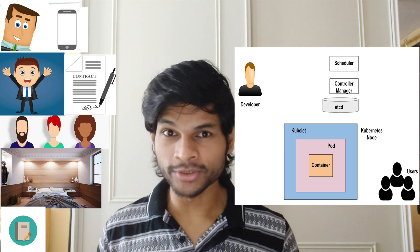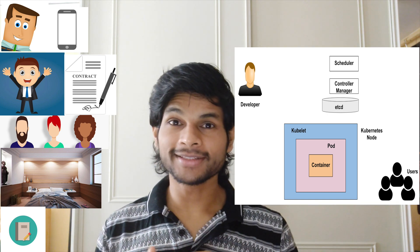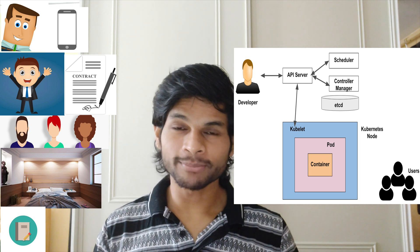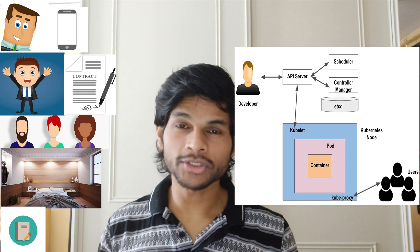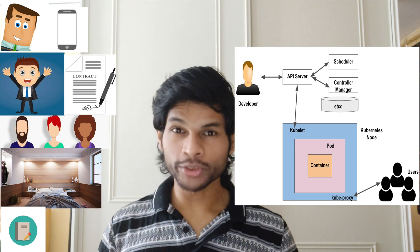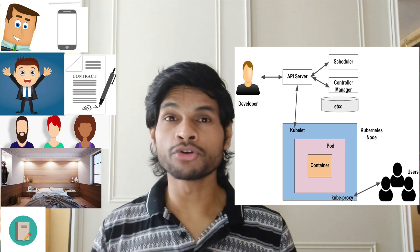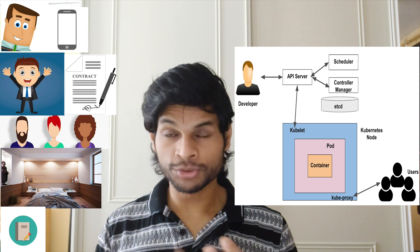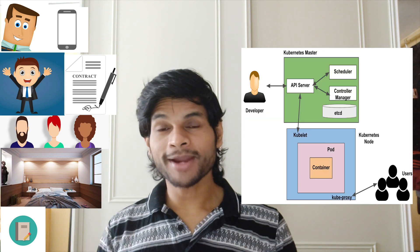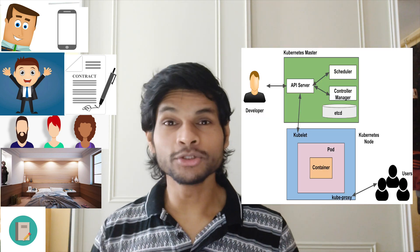Just like the agent can communicate with his employees using a phone, there are equivalent concepts in Kubernetes. There is an entity called the API server — just like the agent has his phone — and similarly each worker node has something called kube-proxy, just like every employee of the agent has his own phone. All four things — the API server, etcd data storage, the kube-controller-manager, and the kube-scheduler — constitute the Kubernetes master.